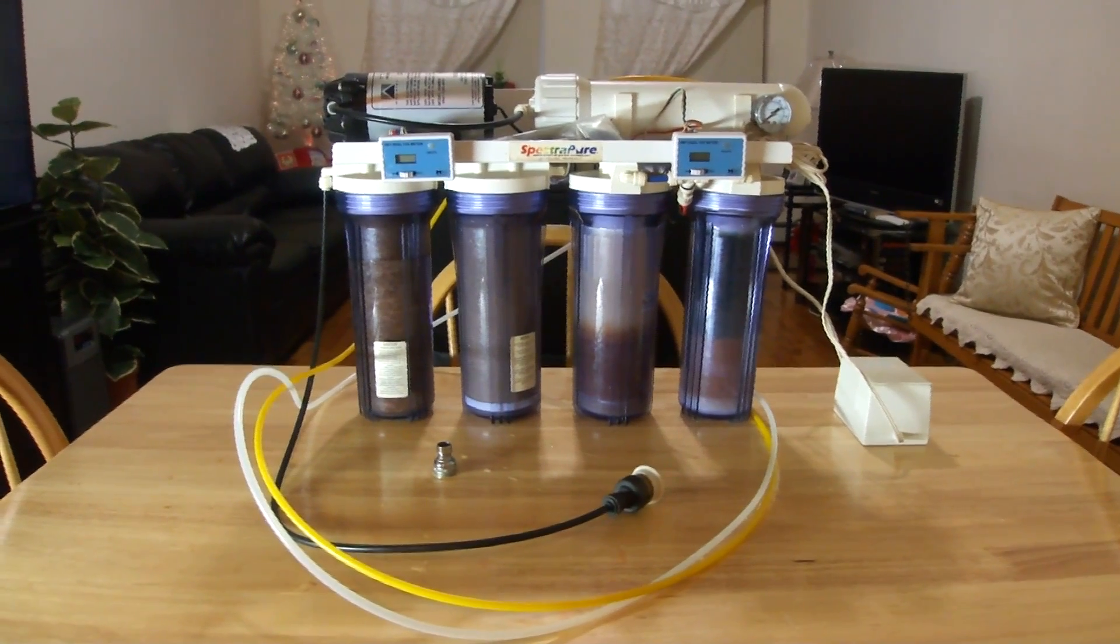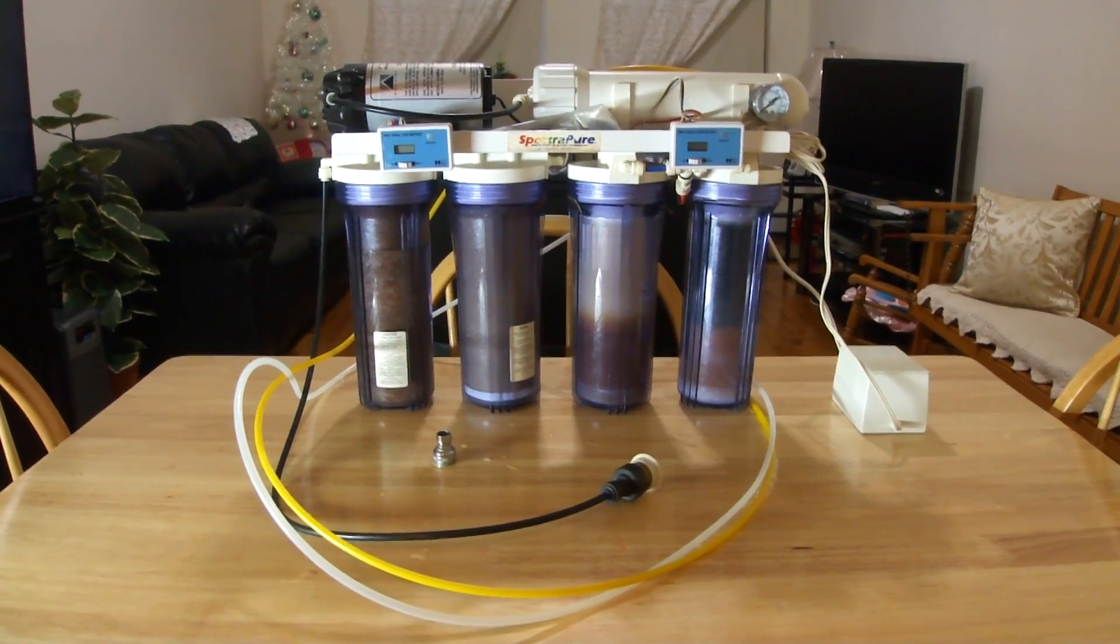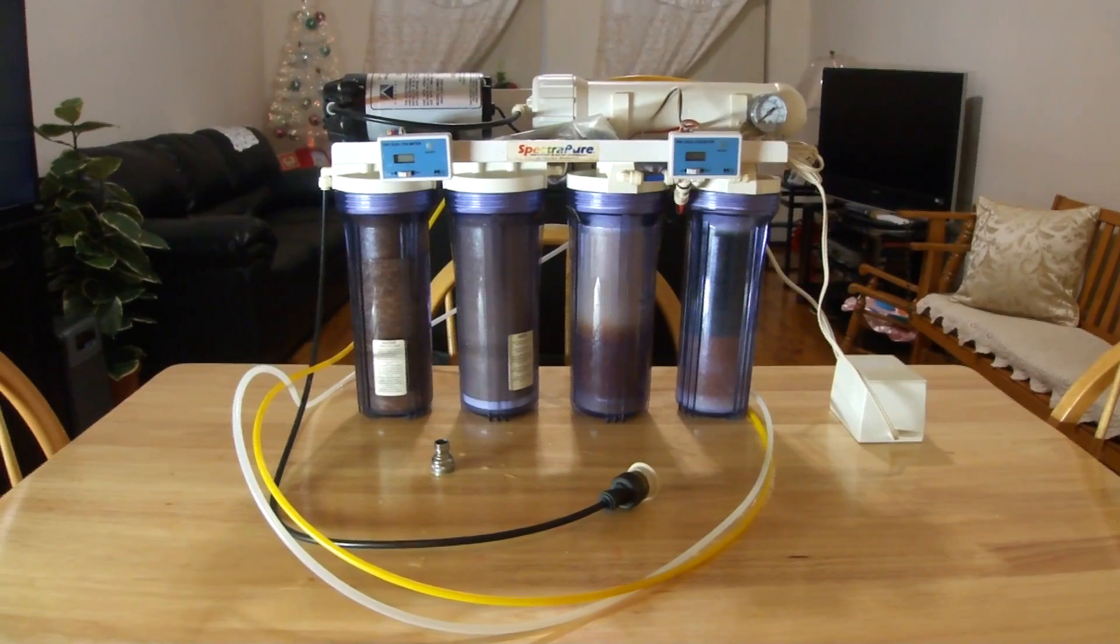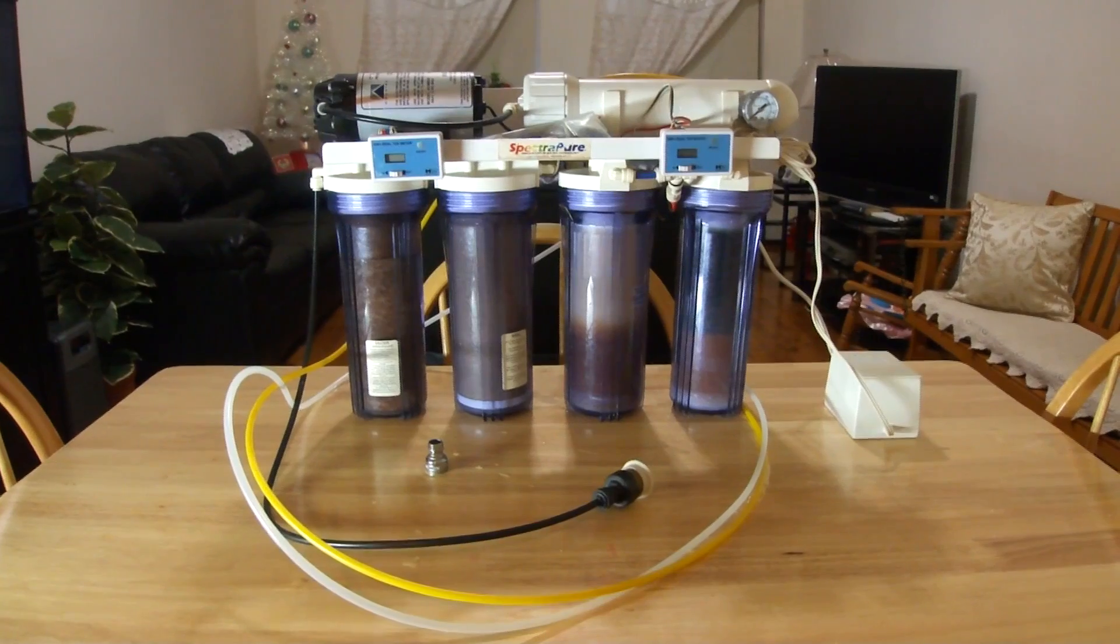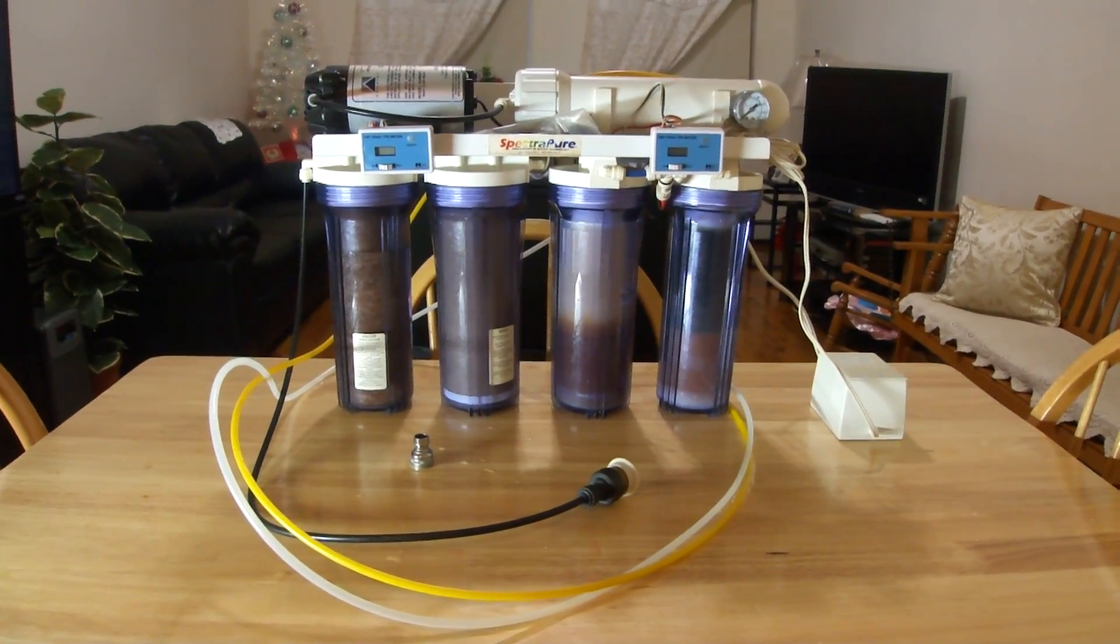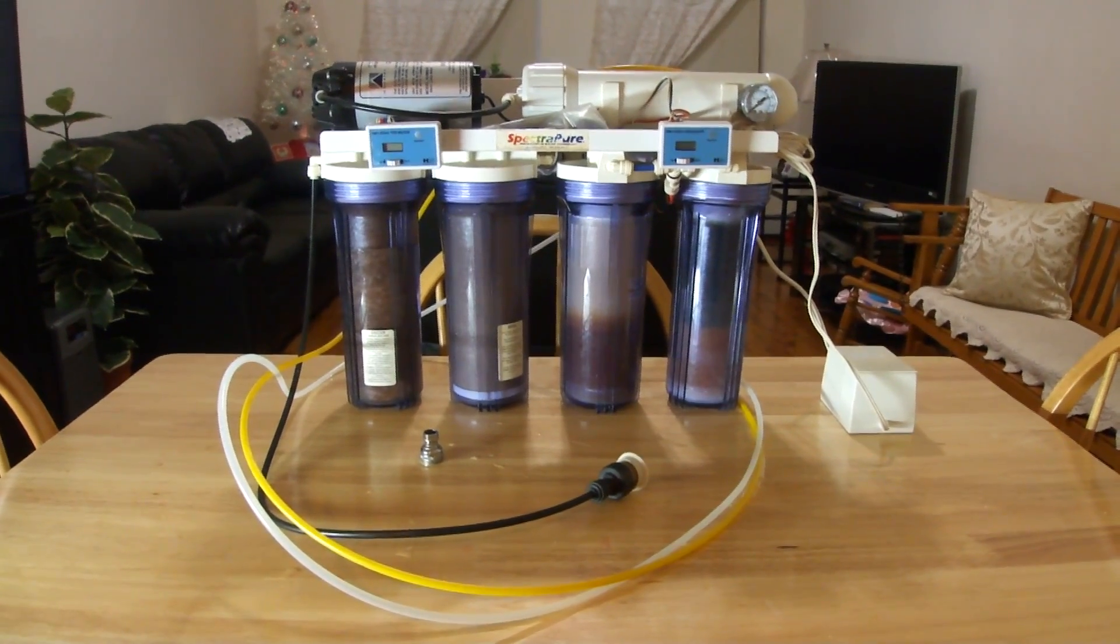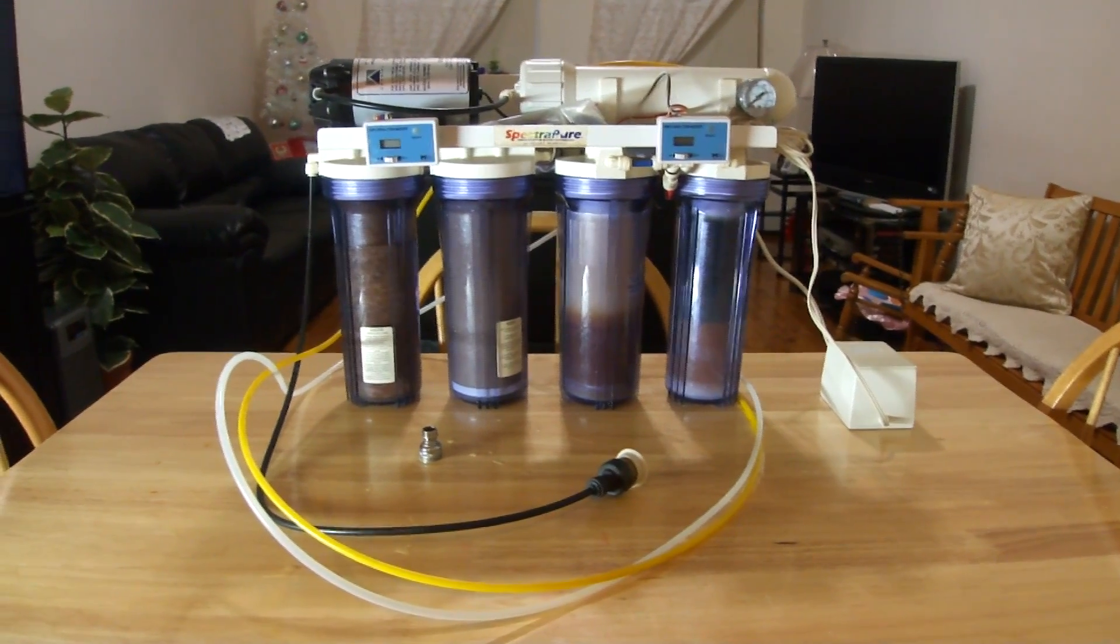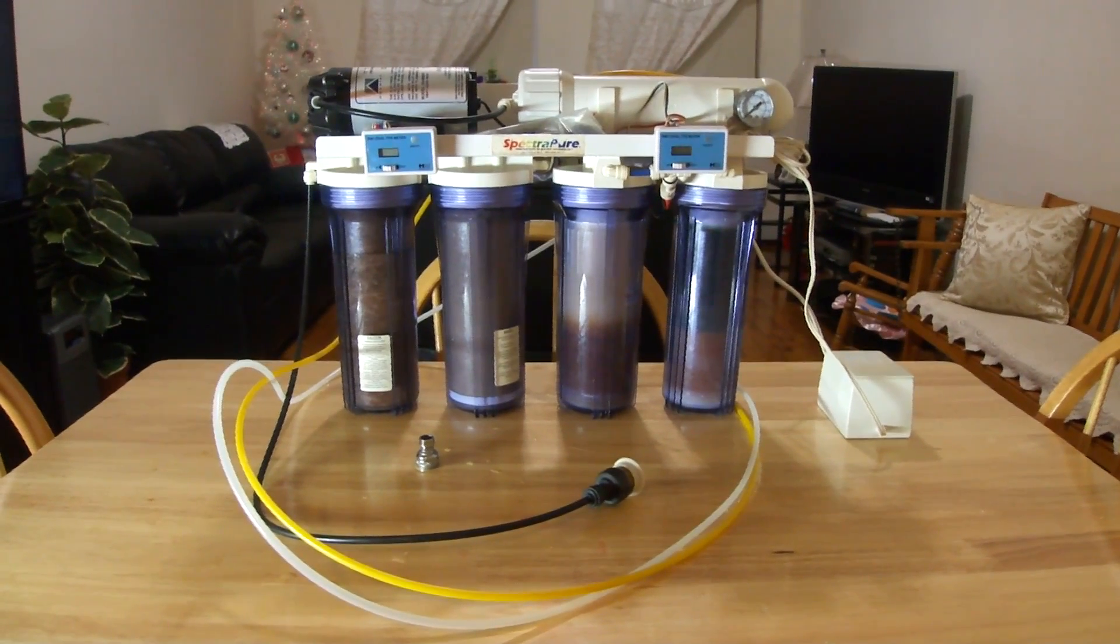90 gallon per day means in 24 hours you'll be able to collect 90 gallons of pure water, but that's not the case because in order for you to collect 90 gallons per day, the water coming from your tap into the membrane must be 77 degrees. And we all know that here in New York, even in the summertime, my water is like 50 degrees. So the colder the water, the slower your membrane is going to work in producing pure water.